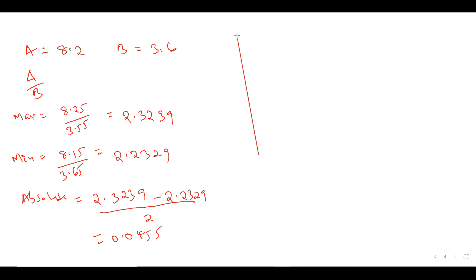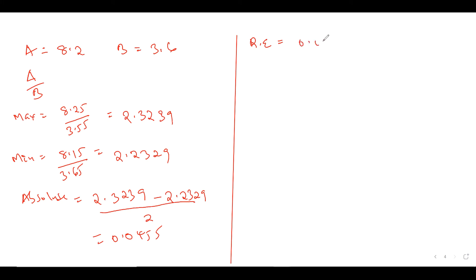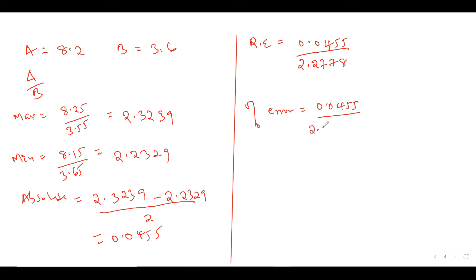Just like the other questions, if they ask for relative error: relative error is given by the absolute (0.0455) over the actual value. The actual value is 8.2 divided by 3.6, which is roughly 2.2778. That's the relative error. If they ask for the percentage error, it's absolute over actual (2.2778) times 100. The answer for this is roughly 1.998%.